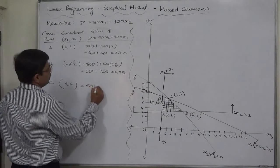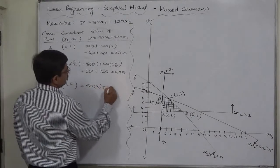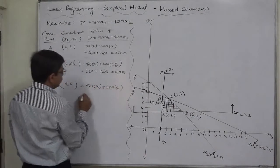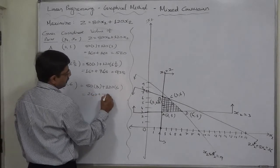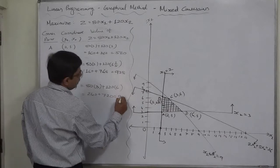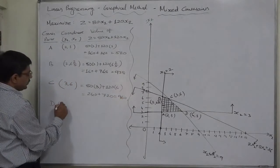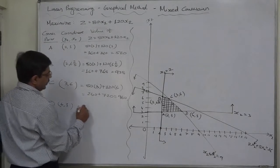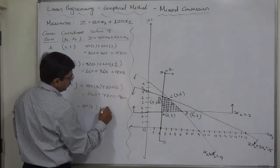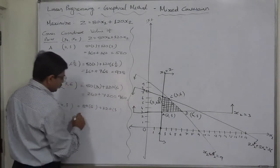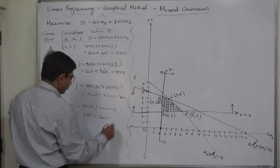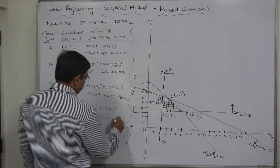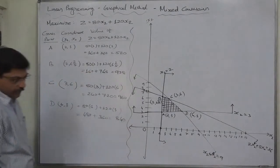At C, 80 into 3 plus 120 into 6, it is 240 plus 720. So it is 960. And at D, it is 6, 3. 80 into 6 plus 120 into 3. So it is 480 plus 360. So ultimately it is 840.